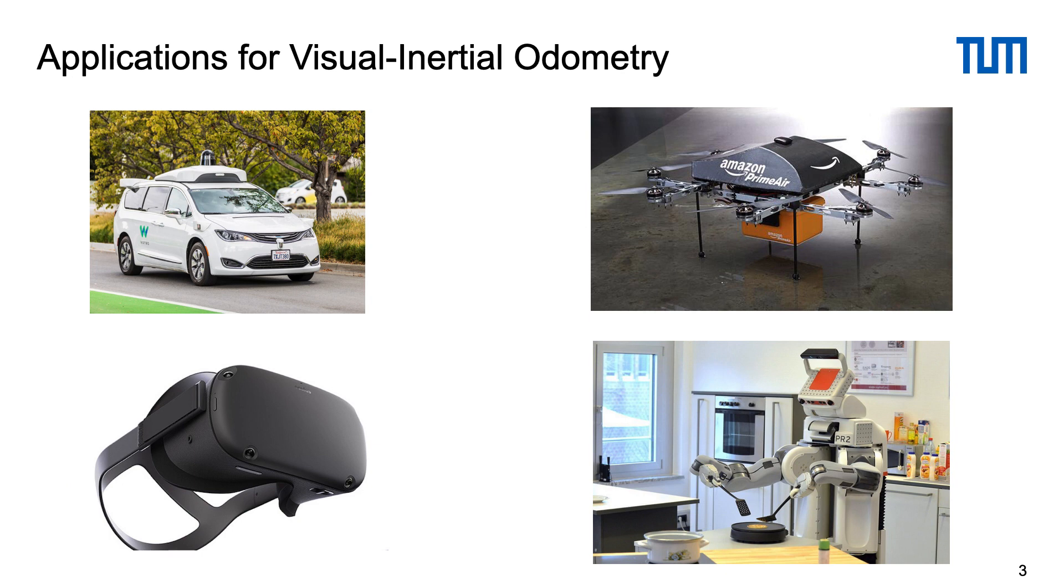Camera-based navigation and mapping is important for many applications, starting from drones that can be used for inspection, surveillance and delivery to household robots that can help us with our daily tasks. It can also be used for autonomous cars and technologies like AR and VR which require spatial understanding and localization.